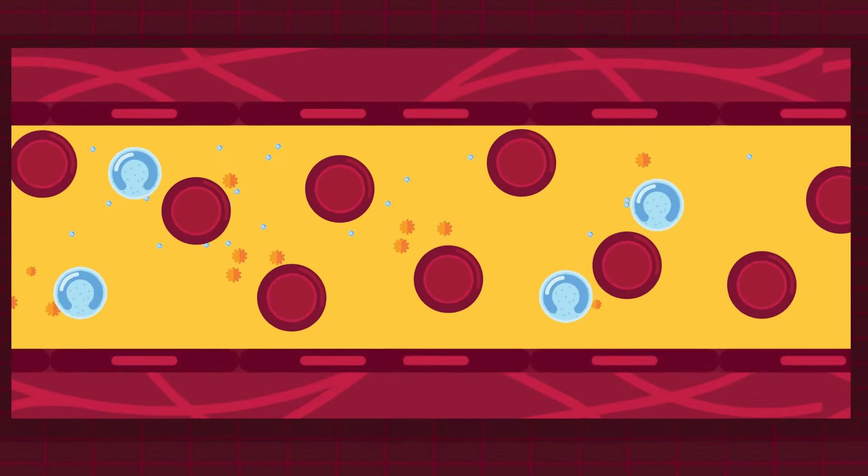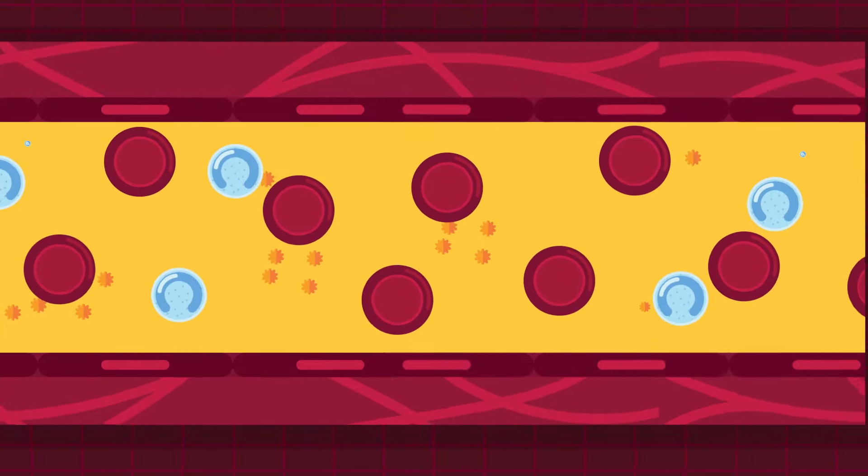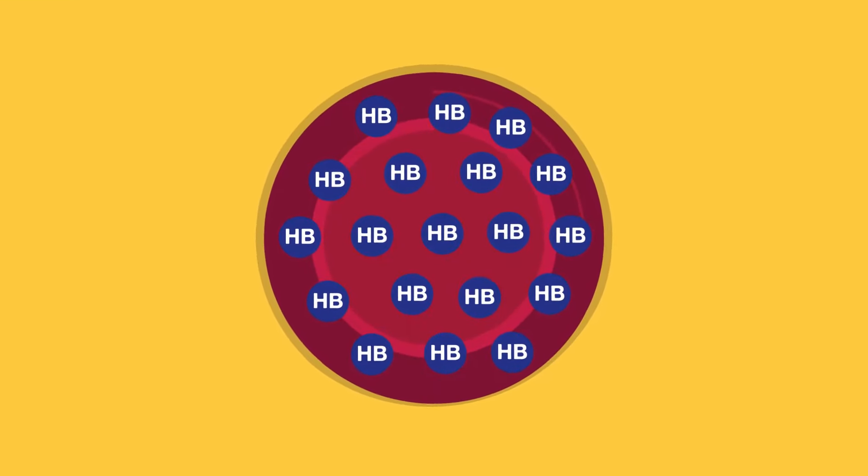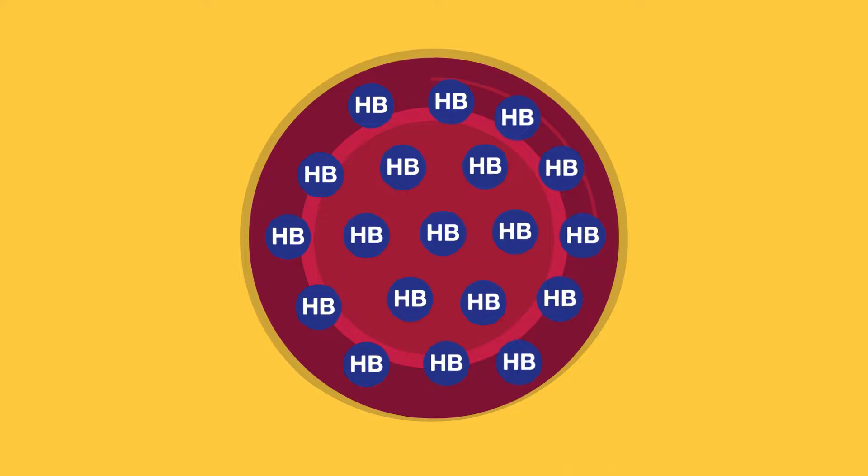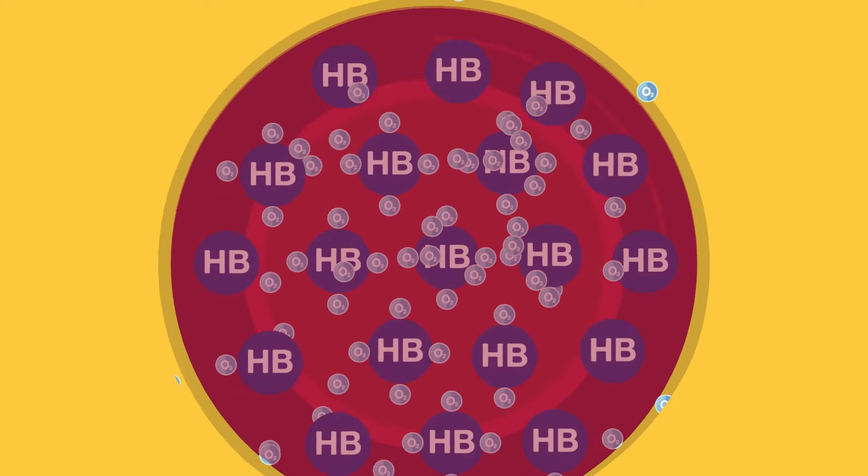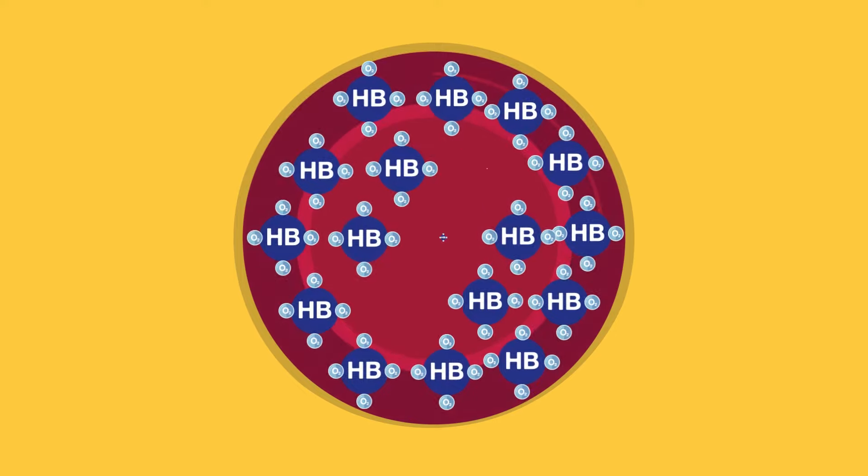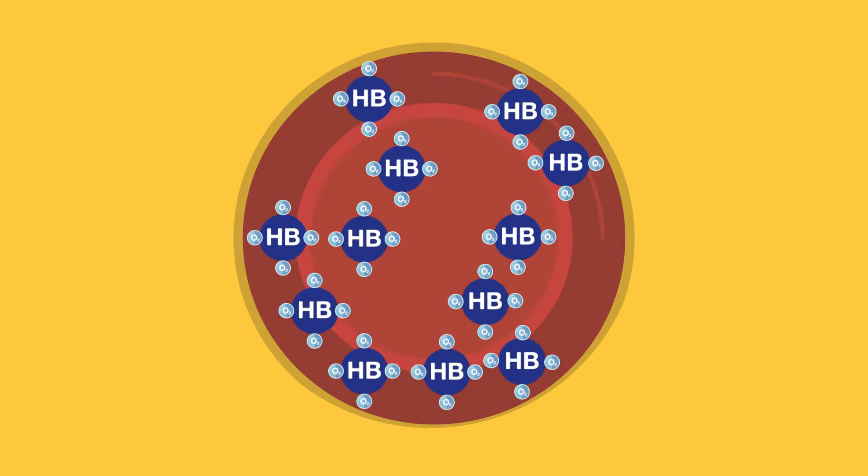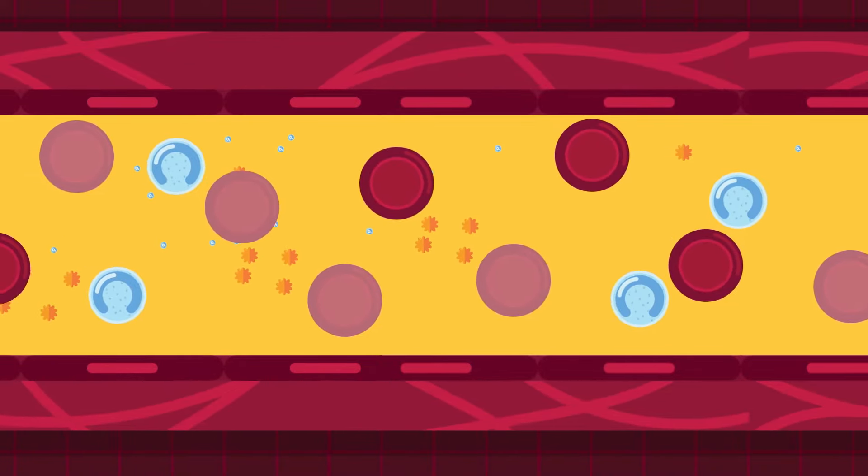Thalassemia is a group of inherited blood disorders. These disorders are caused by genetic mutations that prevent the normal production of hemoglobin. Hemoglobin is the carrier molecule which carries the oxygen obtained during the process of respiration. When red blood cells do not have enough hemoglobin, oxygen doesn't get to all parts of the body. Organs then do not function properly.